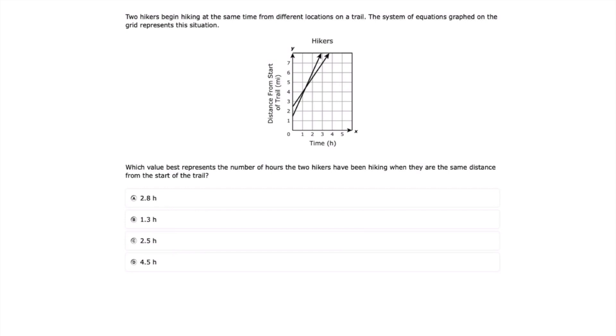This is number 15 from the 2024 Algebra 1 EOC. Two hikers begin hiking at the same time from different locations on a trail. The system of equations graphed on the grid represents this situation.